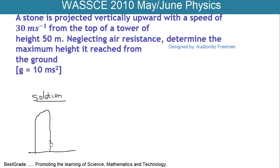So the arrow is indicating the direction of motion. And this is the height of the tower which is 50 meters.